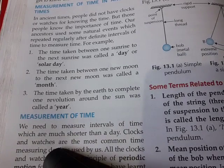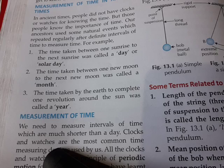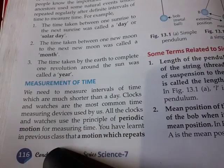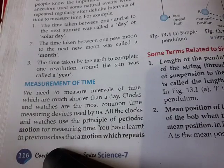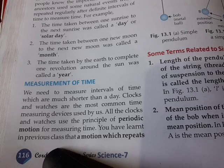The time taken by the Earth to complete one revolution around the Sun was called one year, or ek saal. So in this way, based on the motion of the Sun, Moon, and Earth, they could tell whether it was a day, a month, or a year. This is how time was measured.